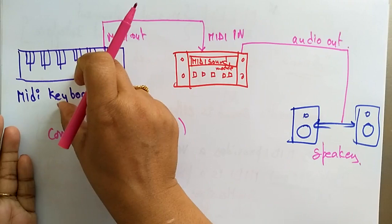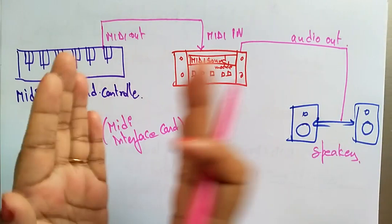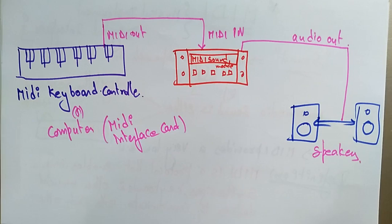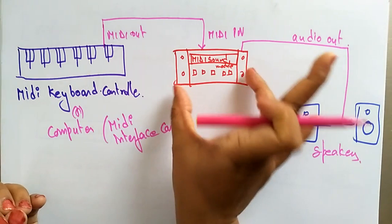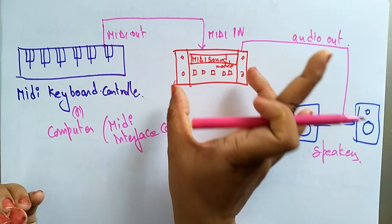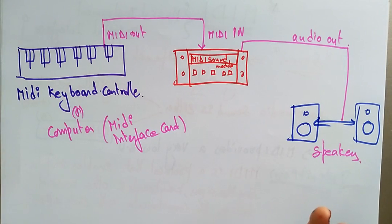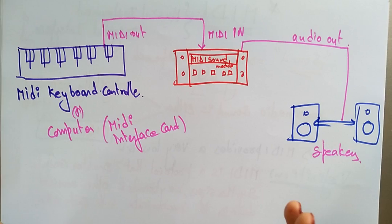So MIDI is a protocol that enables keyboards, computers, synthesizers, and other musical devices to communicate with each other. The aim of MIDI is to provide a Musical Instrument Digital Interface — a clarity of sound that is digitally recorded — with a very low bandwidth alternative for the web, transmitting musical content and certain sound effects that can be controlled and navigated. This is an introduction to MIDI.